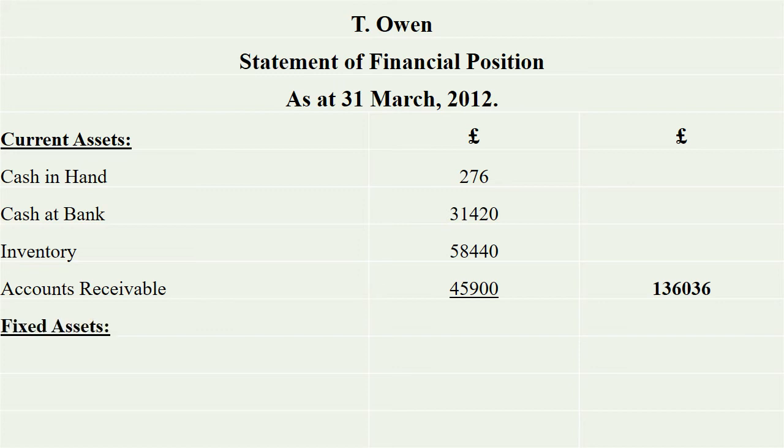After that, we will have fixed assets. In fixed assets, we have the building, that is 125,000. After that, we will have another fixed asset, that is 1,106. Total fixed assets will be 126,106.